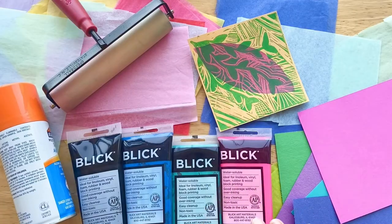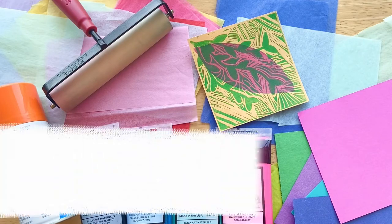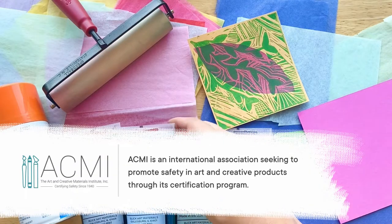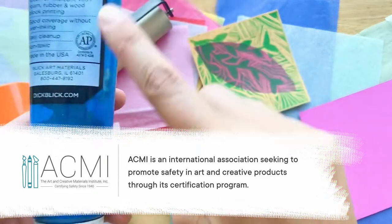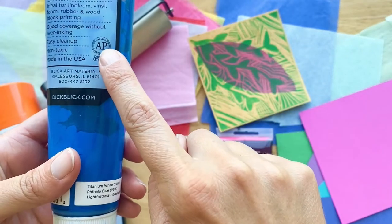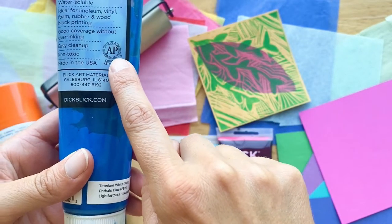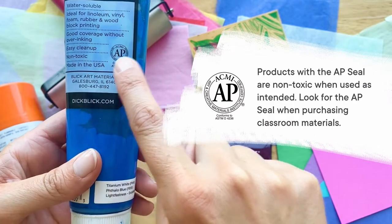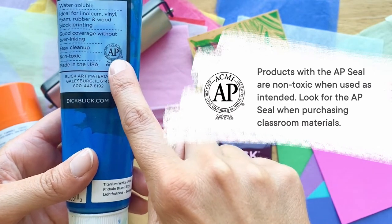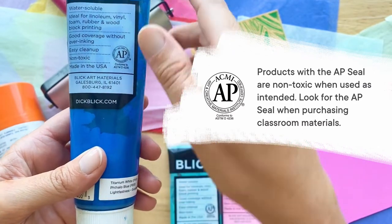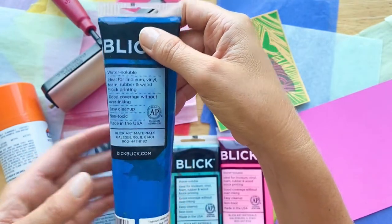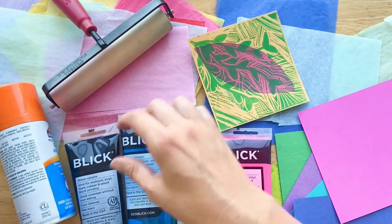So before we get started, let's talk about our materials. I teamed up with ACMI for this lesson and they're the organization that certifies art products with these safety seals. You've probably noticed these on the back of your supplies. The AP stands for approved product and this means that it is non-toxic when used as intended. When a product has the AP seal it can be used with students of all ages.